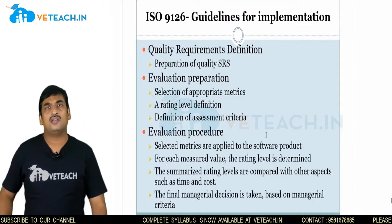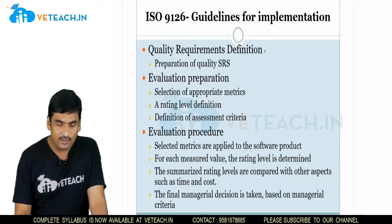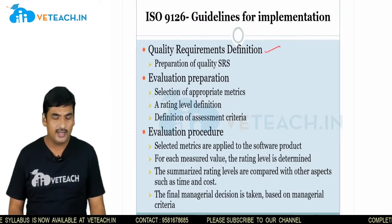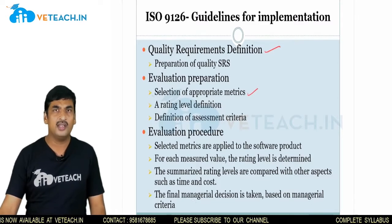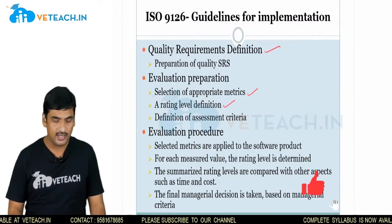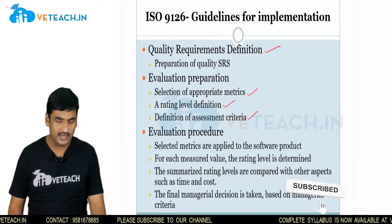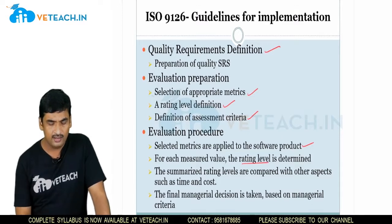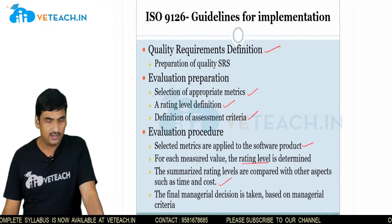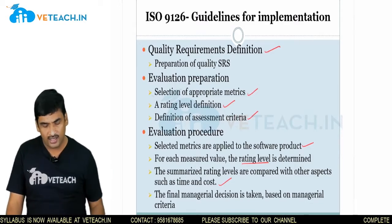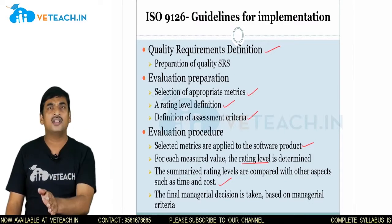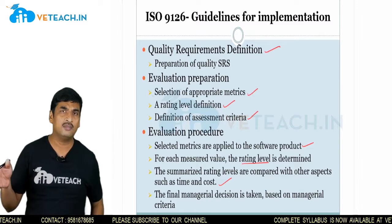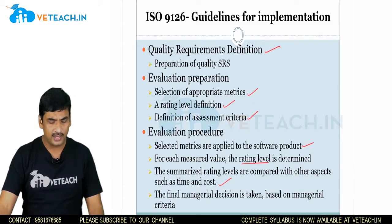To implement ISO 9126, certain guidelines are specified. First, prepare a quality SRS based on the six quality attributes and take appropriate metrics based on functionality, usability, reliability, etc. Define a rating level and assessment criteria for each. Selected metrics are applied to the software project; for each measured value a rating level is determined. These rating levels are summarized and compared, and a final managerial decision to accept or reject the product is taken.